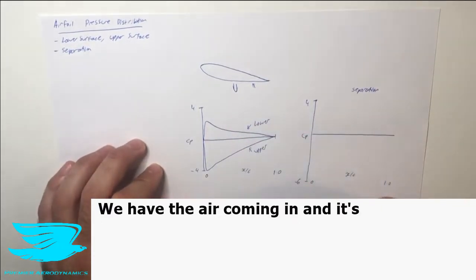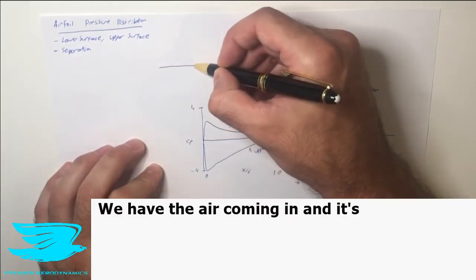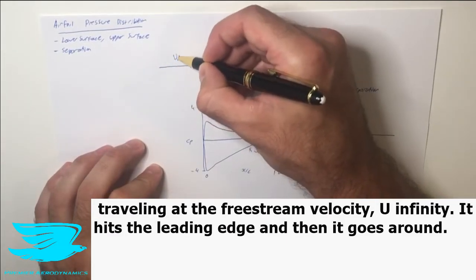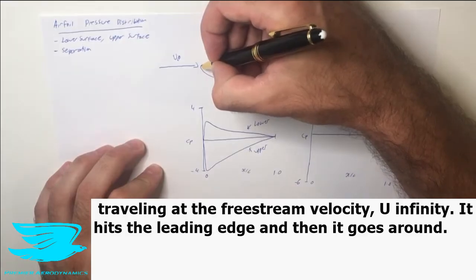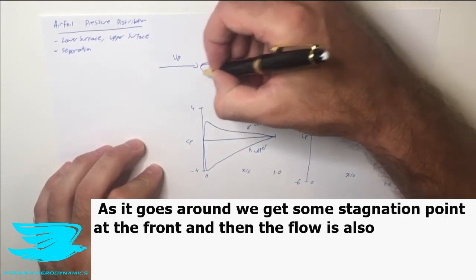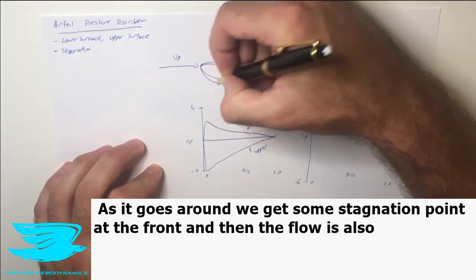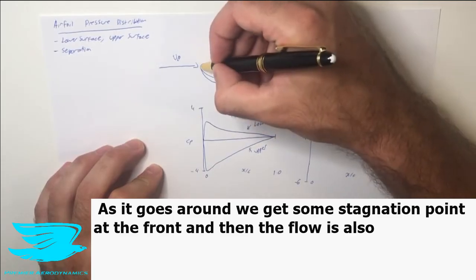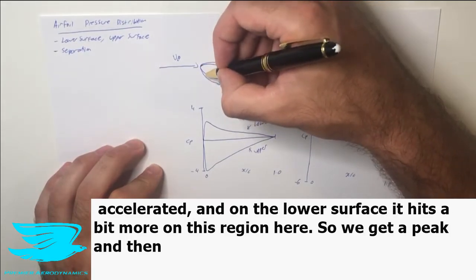So let's explain what's going on. We have the air coming in, traveling at the free stream velocity of u infinity. It hits the leading edge and then it goes around. As it goes around, we get some stagnation point at the front and then the flow starts to accelerate.